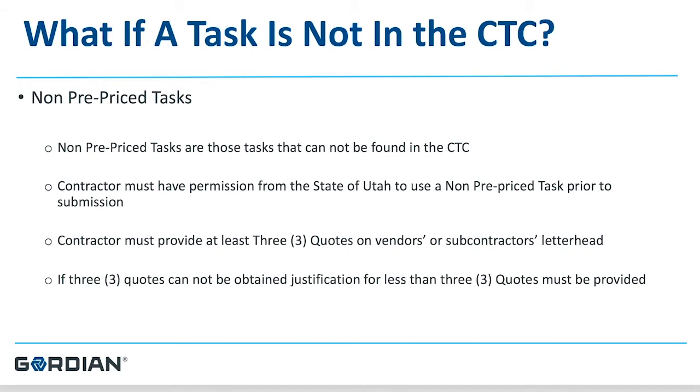When you encounter this situation, you will have to create a non-prepriced task — meaning the 180,000 line item catalog does not have the item you're looking for. This can happen commonly in the LED lighting section, as LED lighting changes rapidly. If you are looking for a certain LED fixture and cannot find it in the price book, you will be instructed to create a non-prepriced task. You can actually add to the price book over time. The contract has a clause that if a non-prepriced item is used on three different proposals, it can be added to the price book in the next contract year. Think of the CTC as a living and breathing document.